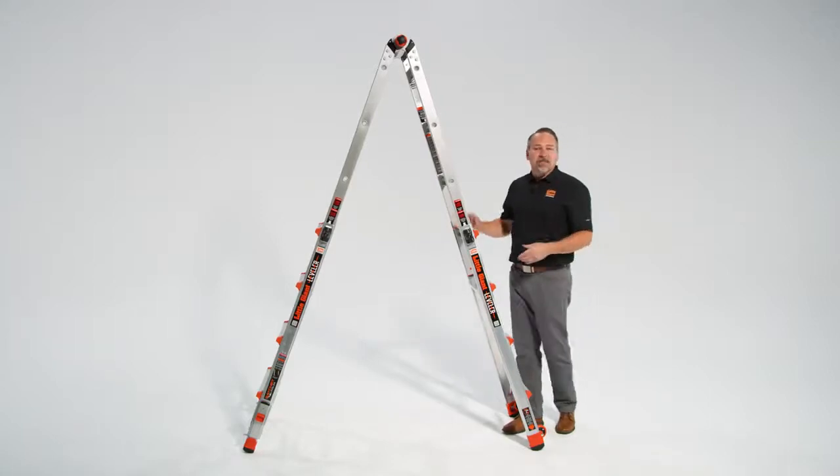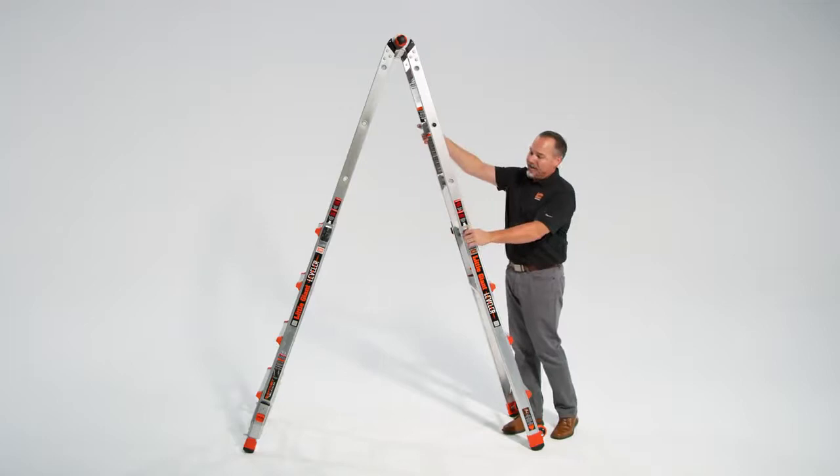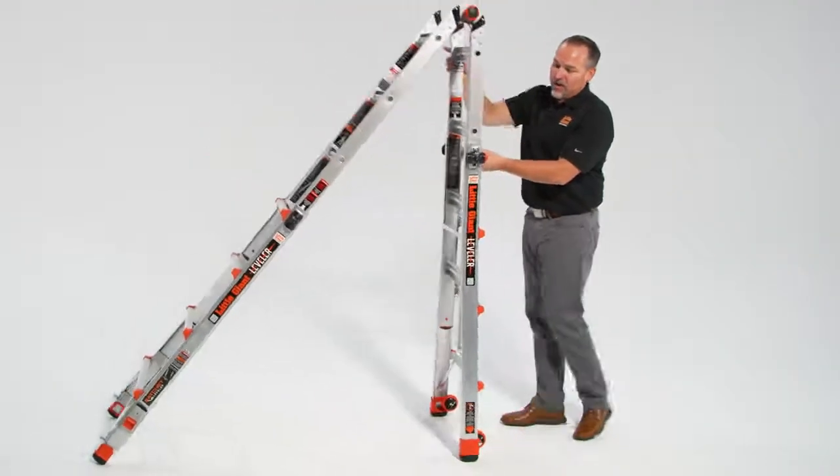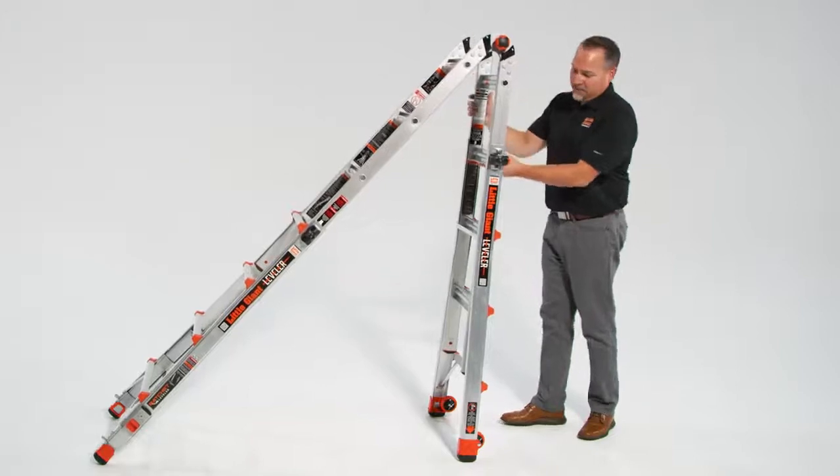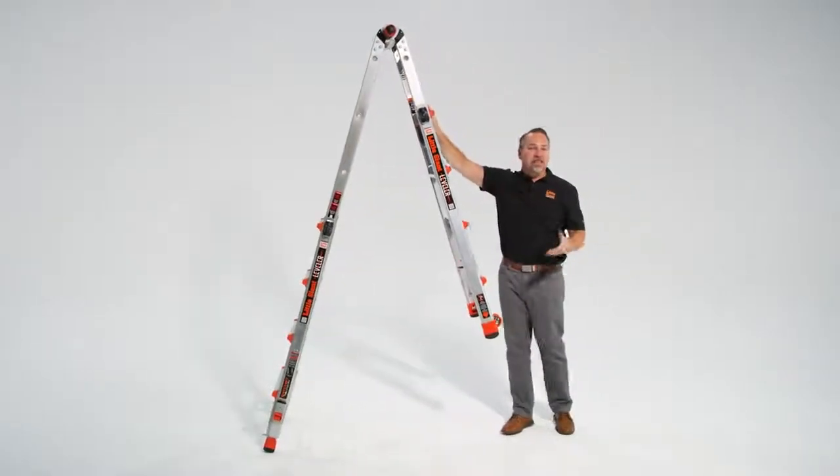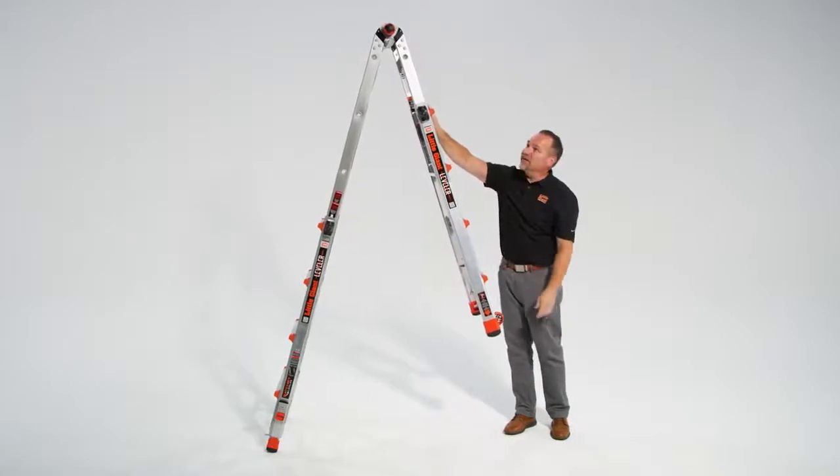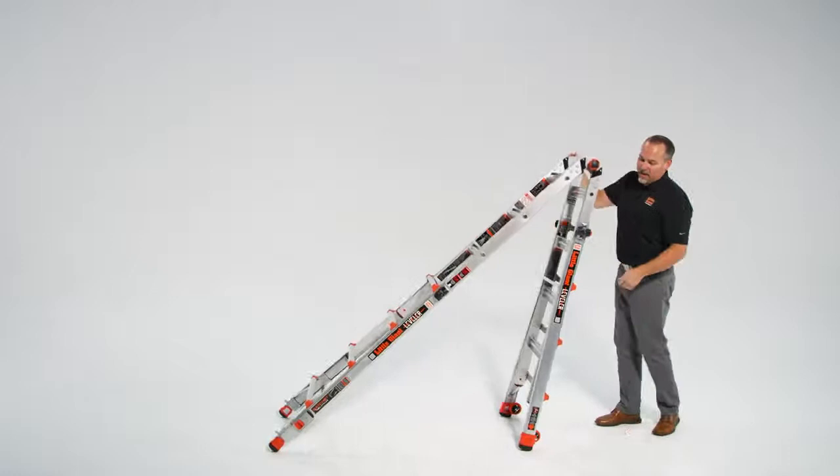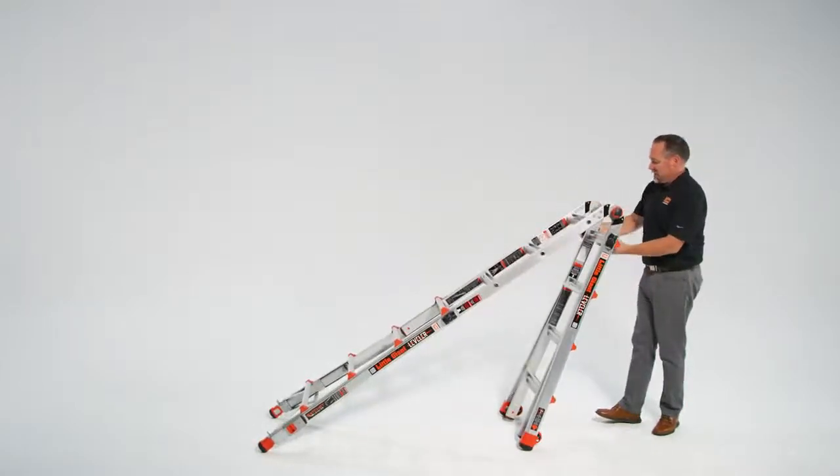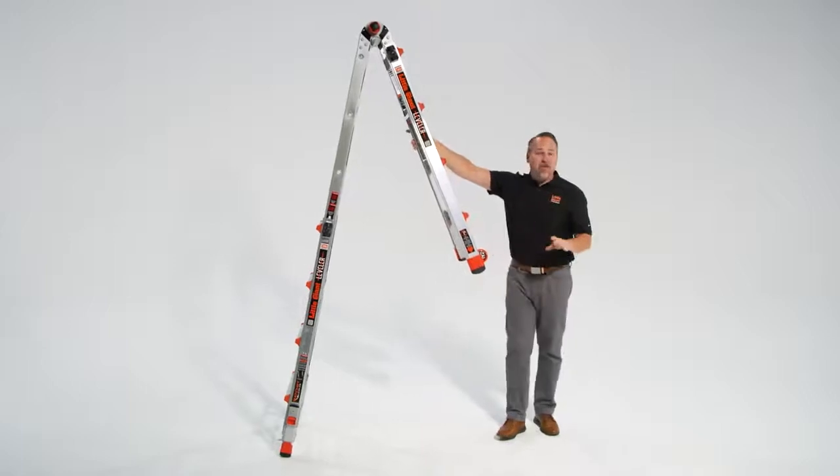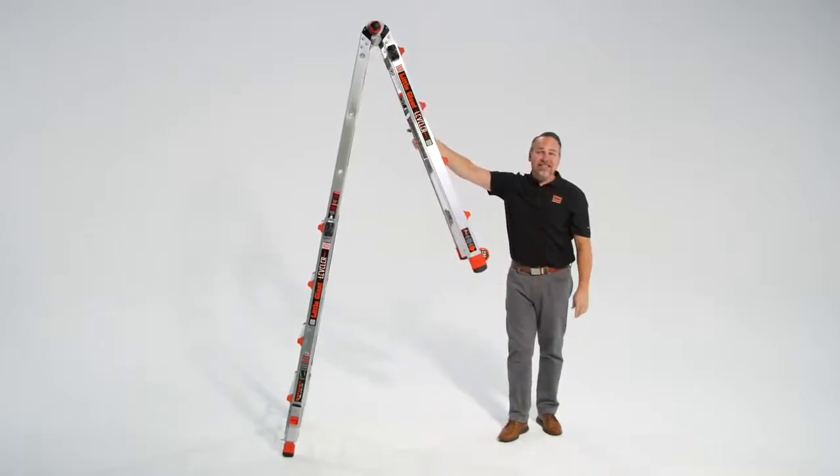If you're going to use it on an unlevel surface or a hillside or even staircases, we're just going to make one side of this ladder shorter or longer than the other. You'll notice that now I can put the ladder up on a hillside, embankment, unlevel ground. Even staircases will make this change a little bit more dramatic. That's how you set your leveler in the staircase.